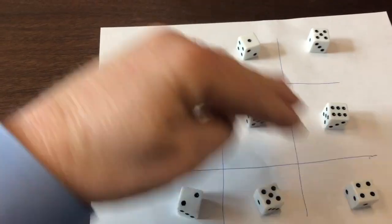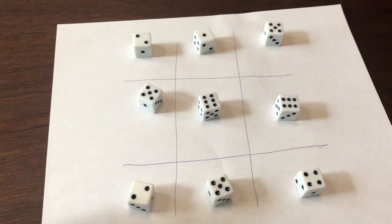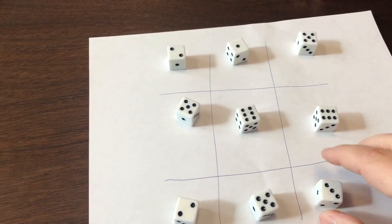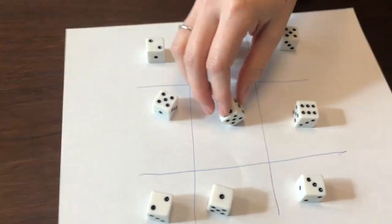Every time I add a row or a column or a diagonal, it's giving me a different answer. Here's your challenge: arrange these dice and you get to choose whatever numbers, so it's not a matter of chance.